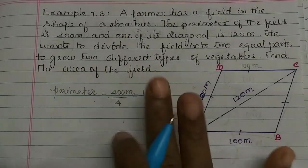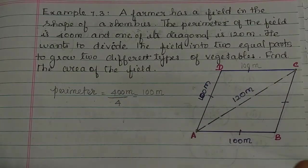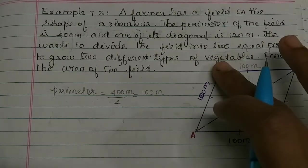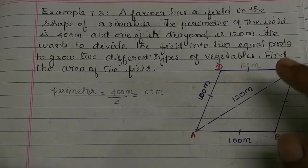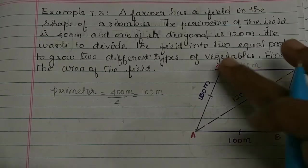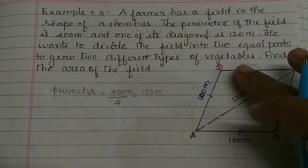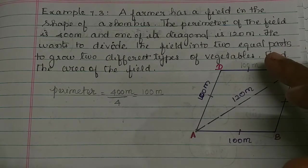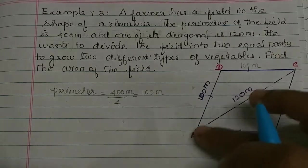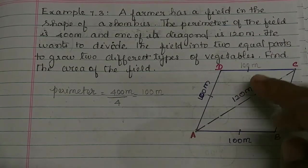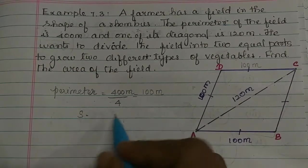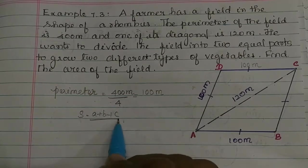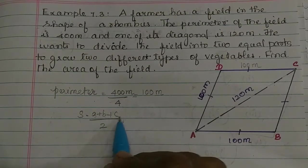Now we have the area of the field. We have two triangles. First, we find the area of one triangle. We use the Heron's formula: root of s into (s minus a) into (s minus b) into (s minus c). Here a, b, c are the three sides of the triangle. First, s equals (a plus b plus c) divided by 2.